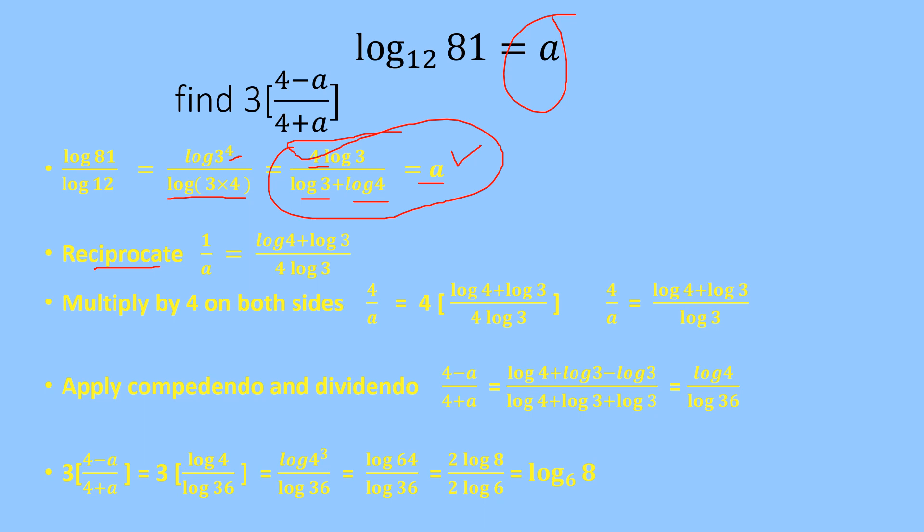Multiply by 4 on both sides. We get 4 upon a equals 4 multiplied by the whole equation. Cancel out this 4 with this 4 and we are left with 4 upon a equals log of 4 plus log 3 upon log of 3.